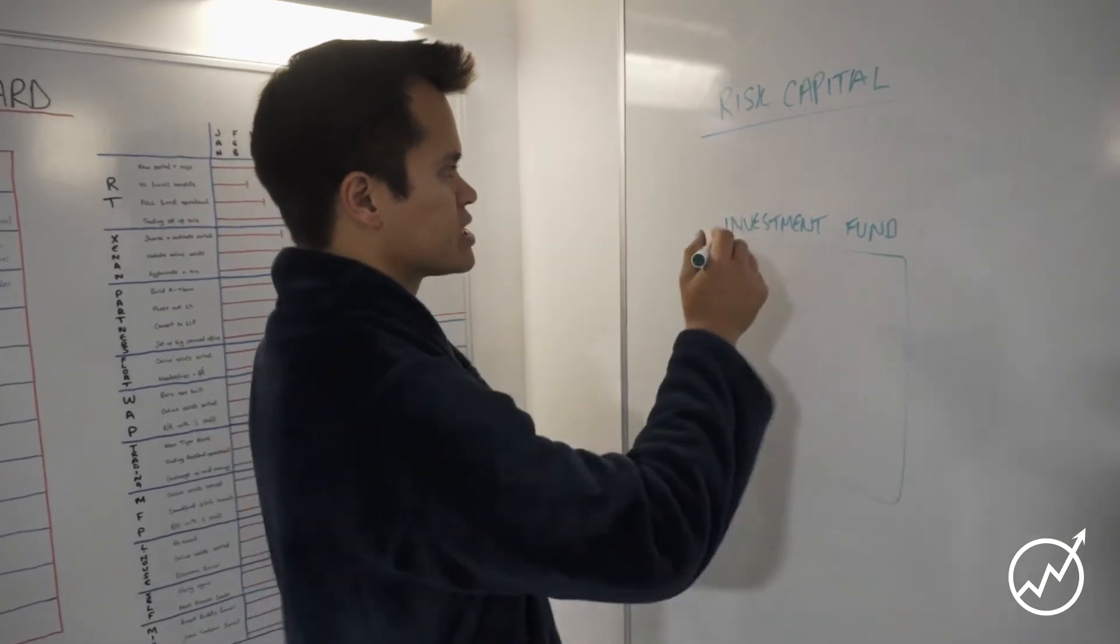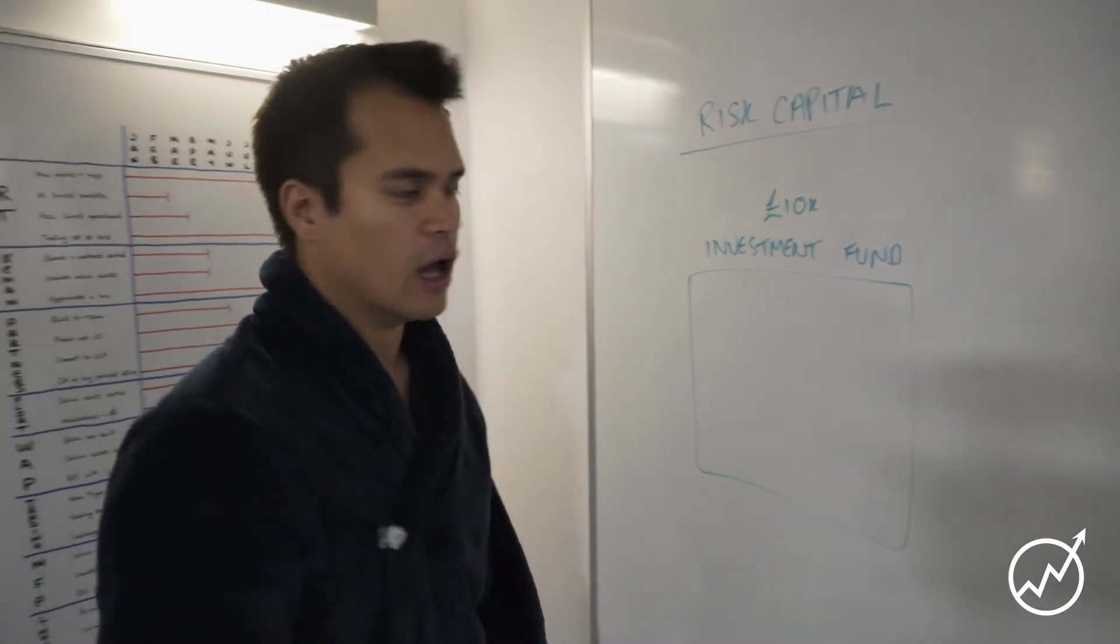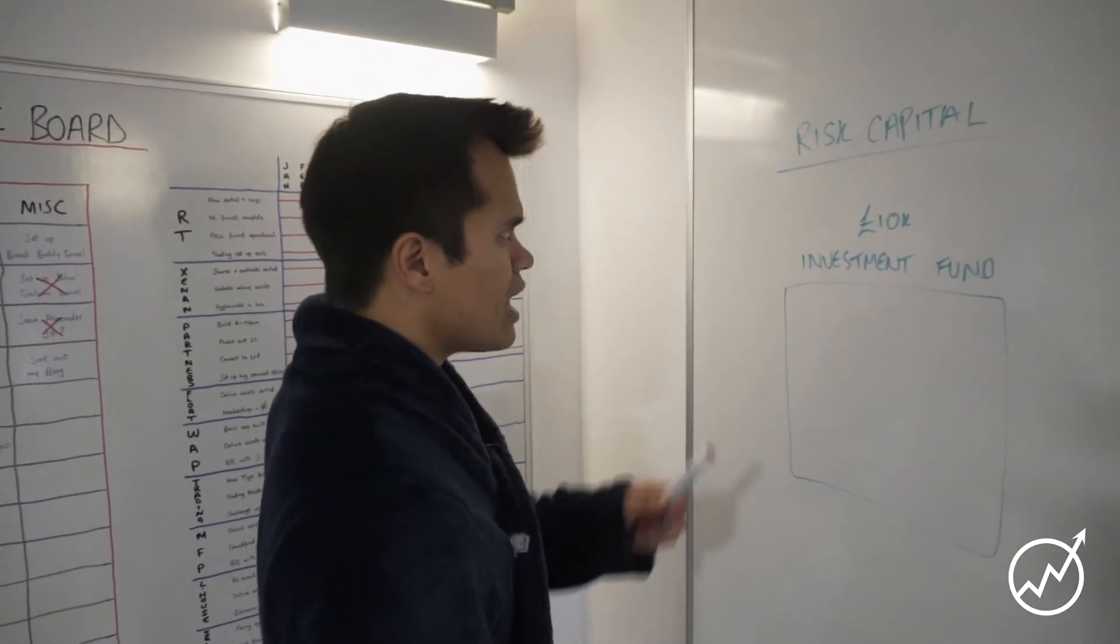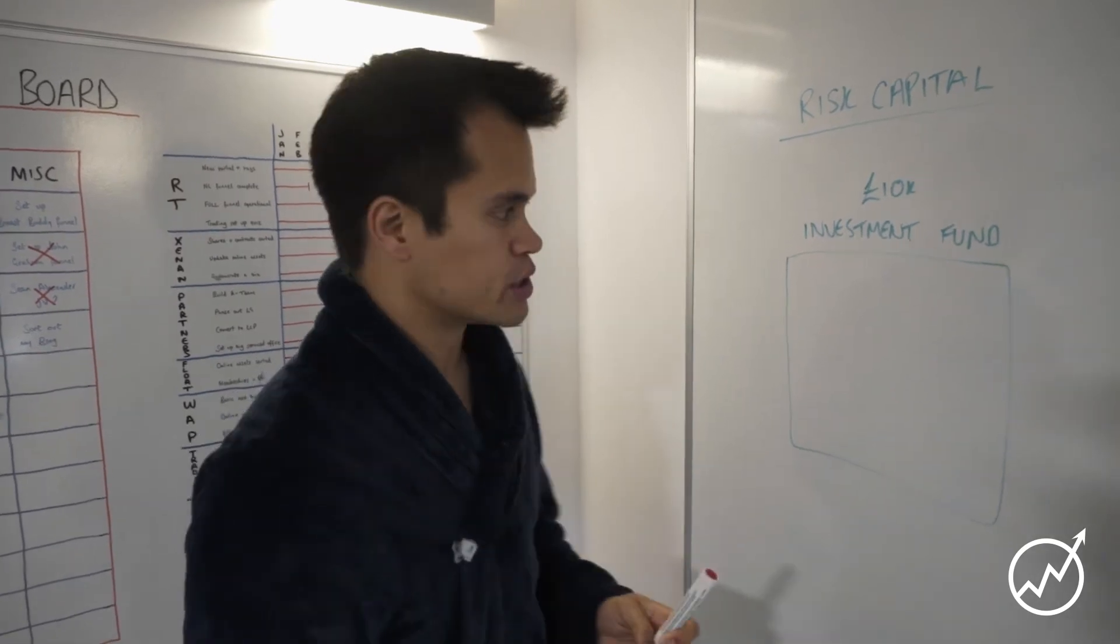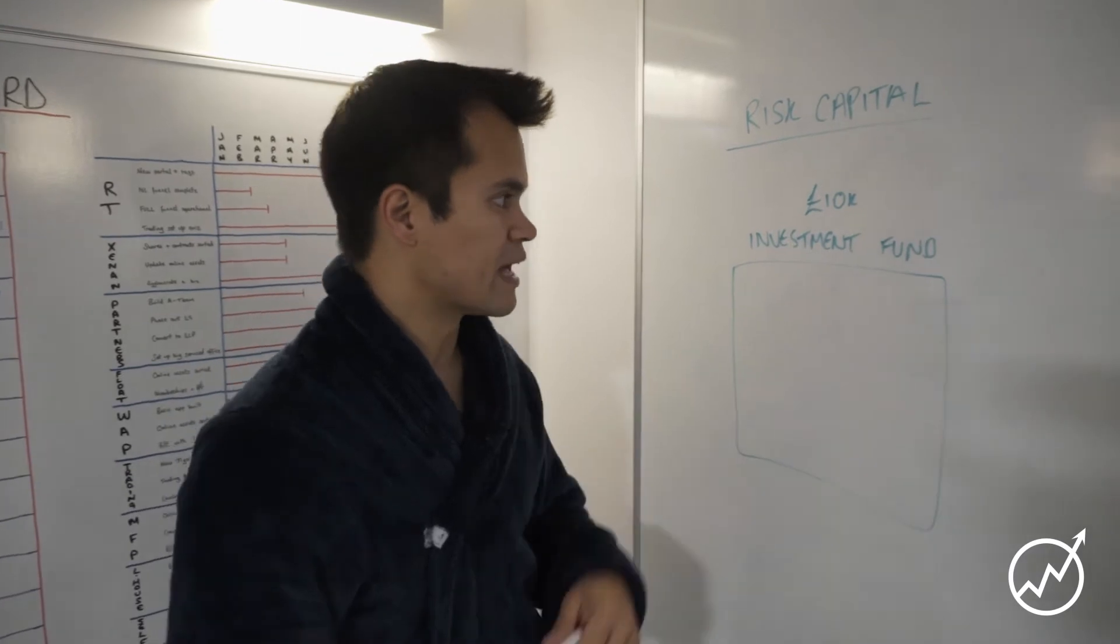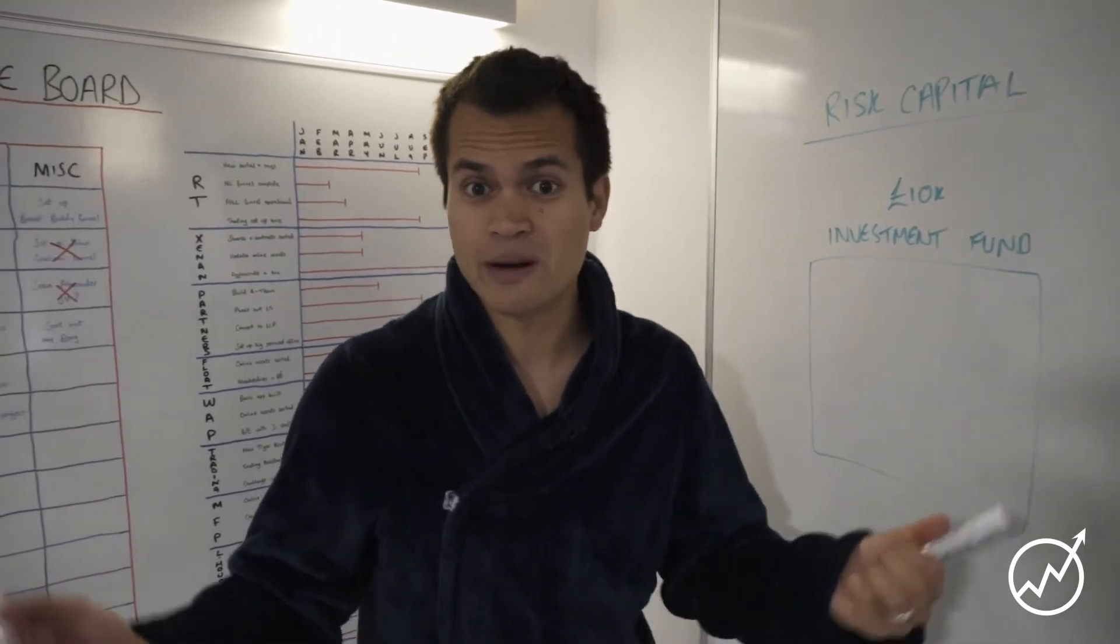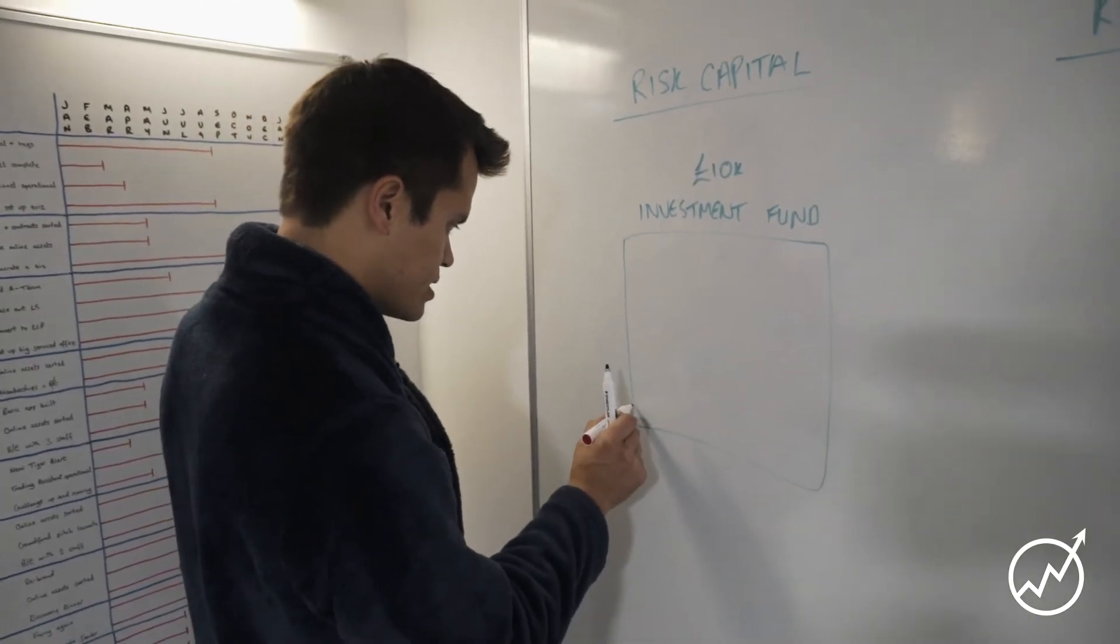Let's just say you've got 10 grand in investable money. Now the amount of risk capital is completely up to you, so it could vary anywhere from 1% of your investable assets to 10%, some even more. But let's just say it's up to 10%. So basically...